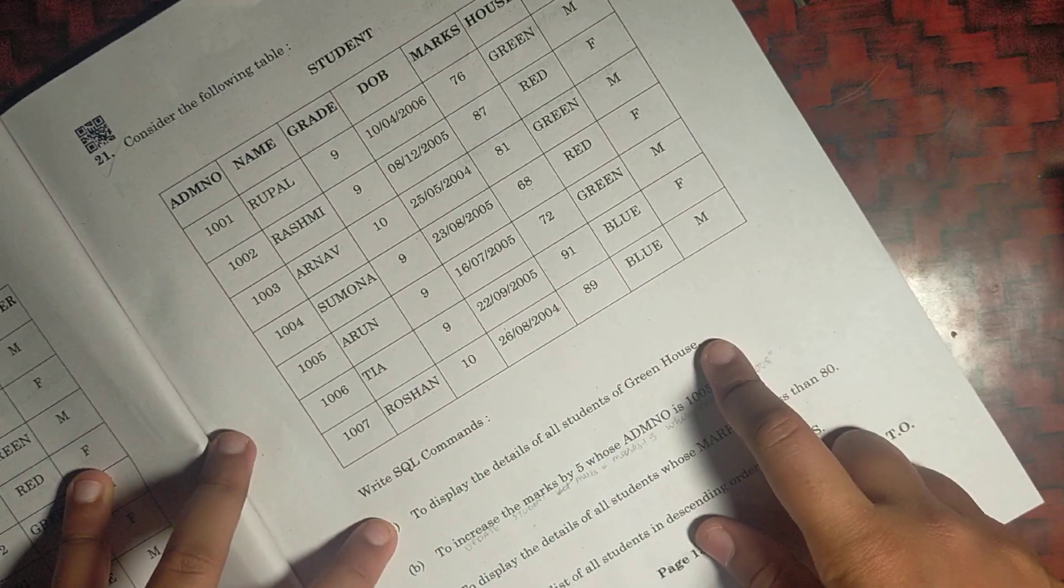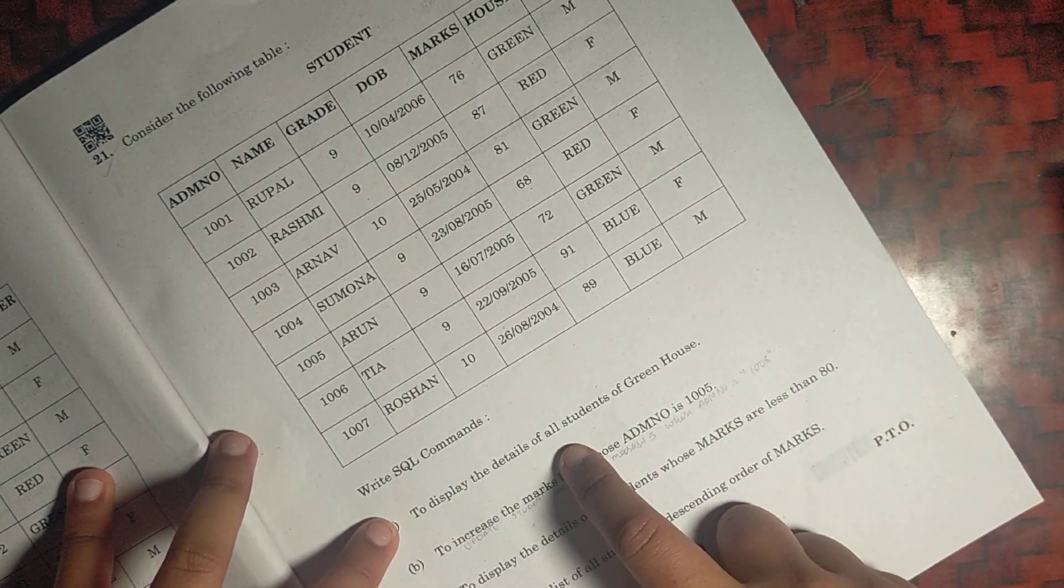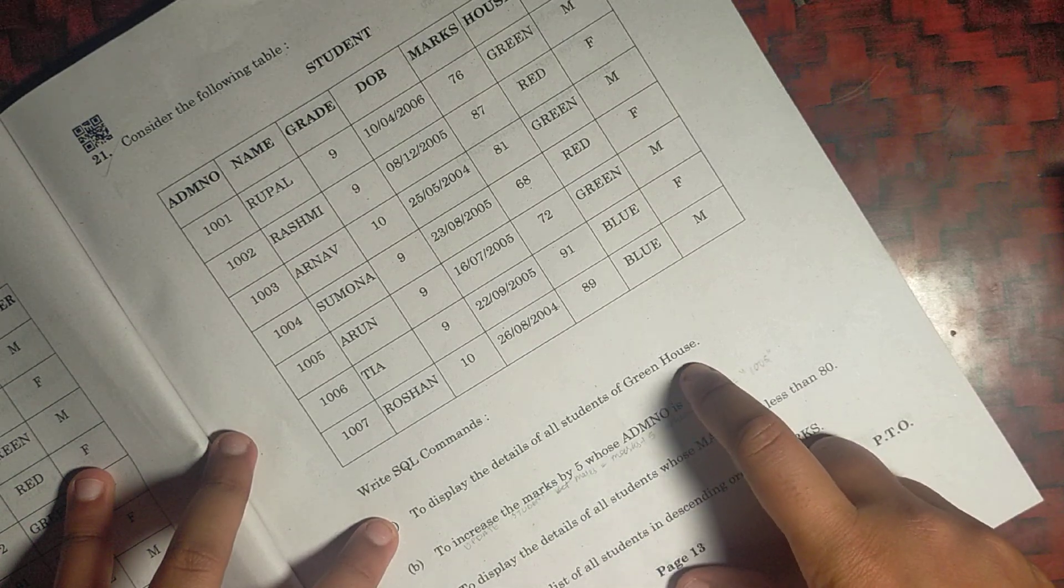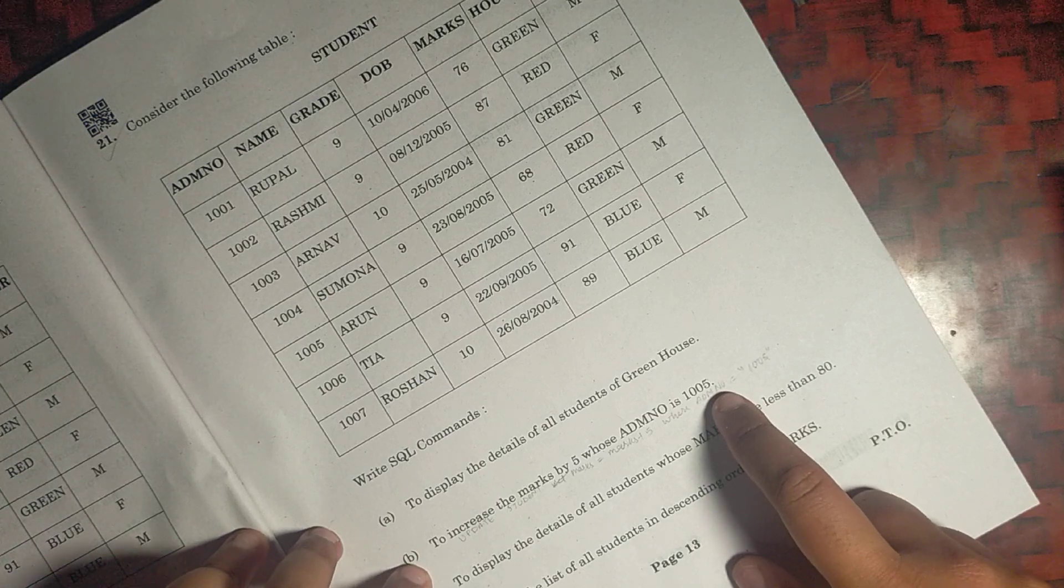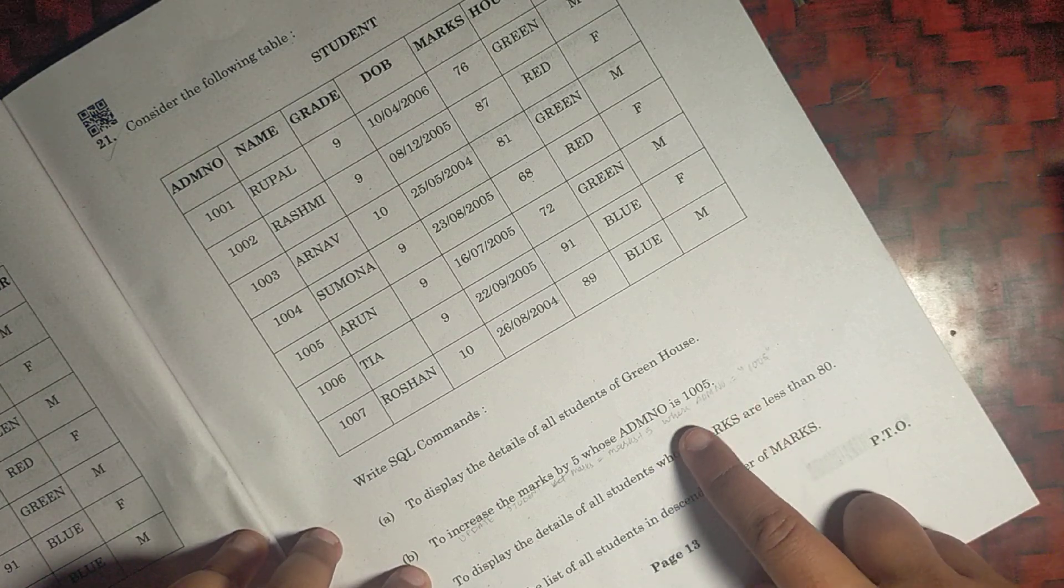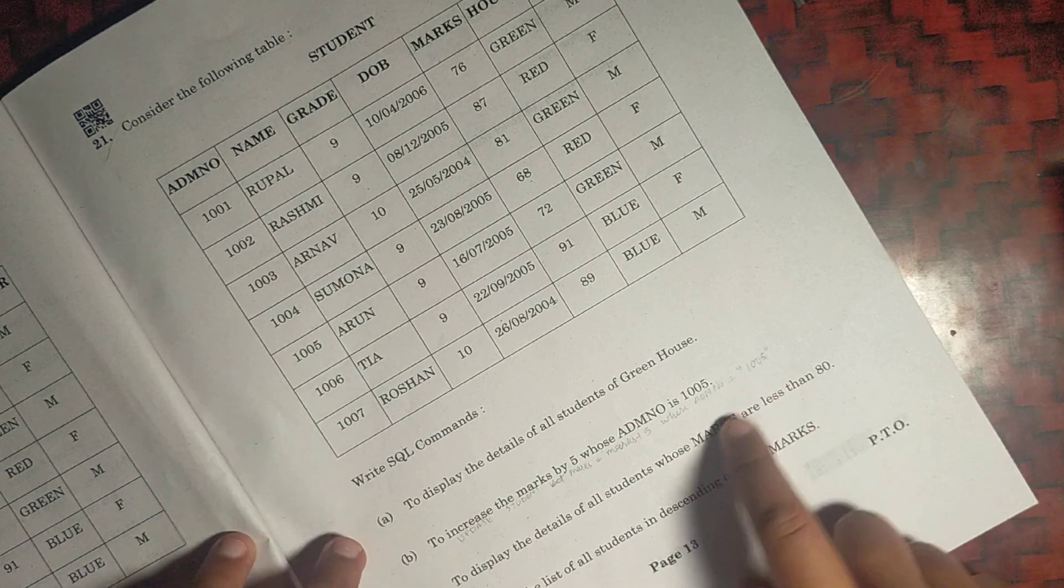This will be SELECT * FROM student WHERE house = 'green'. This will be UPDATE student SET marks = marks + 5 WHERE admission number = 1005.